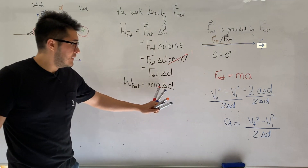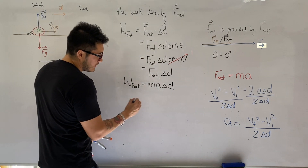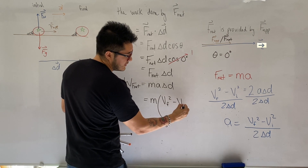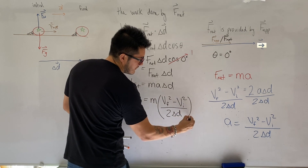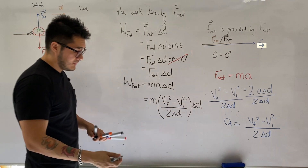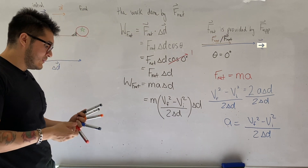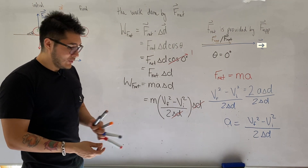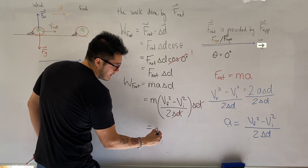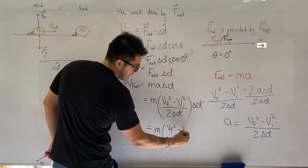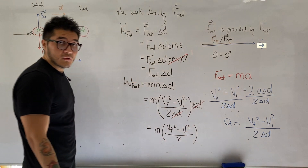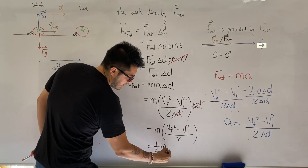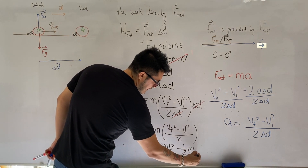Now we make a substitution into the work equation. The work done by the net force is mass times acceleration, and acceleration is given by (V_final squared minus V_initial squared) divided by 2·Δd, times displacement. Notice that displacement appears in both the numerator and the denominator, so those two quantities cancel each other out. Simplifying, we get: mass times (V_final squared minus V_initial squared) divided by 2, which expands to one-half·m·V_final squared minus one-half·m·V_initial squared. That is our new formula for the work done by the net force.